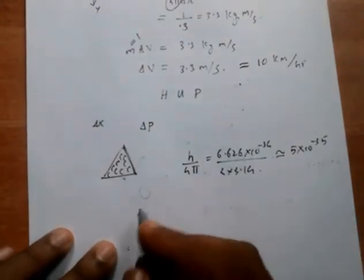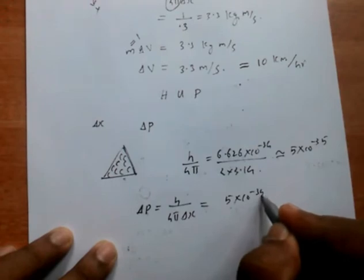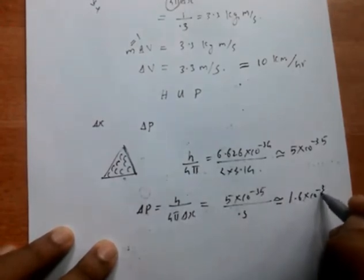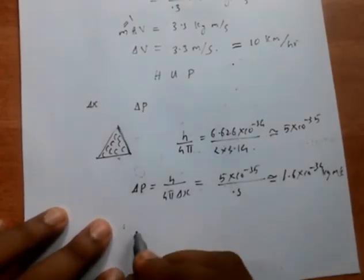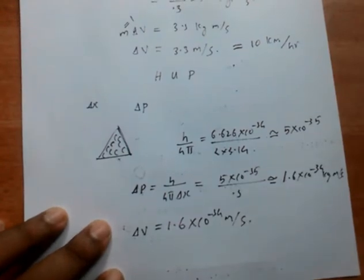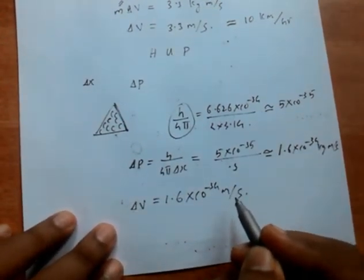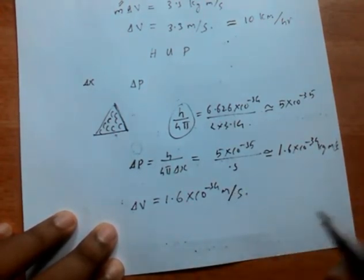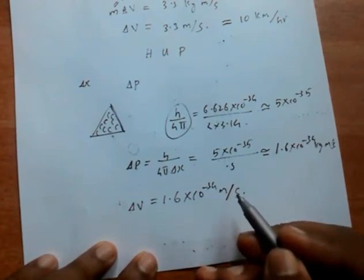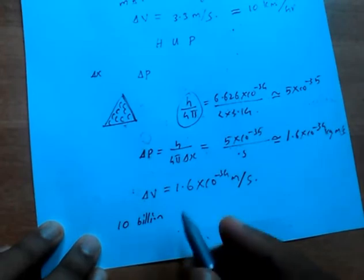We can find out the momentum: delta p equals h divided by 4π times delta x, which equals 5 times 10 raised to minus 35 divided by 0.3. This gives approximately 1.6 times 10 raised to minus 34 kilogram meter per second. We can find out the velocity from this: delta v equals 1.6 times 10 raised to minus 34 meter per second. This is the result using the real value of h divided by 4π. So the velocity of the billiard ball is 1.6 times 10 raised to minus 34 meter per second.